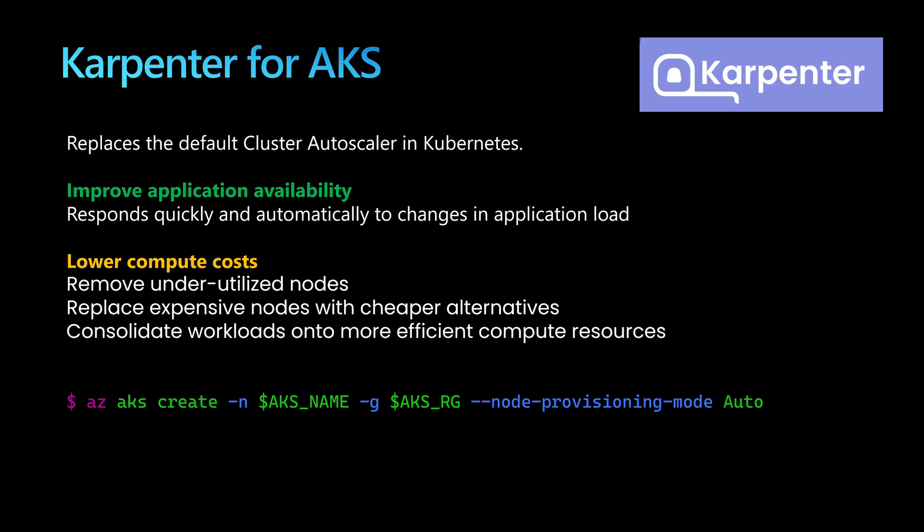With Karpenter, you can improve application availability because Karpenter can respond quickly and automatically to changes in application load. You can also lower compute costs because Karpenter will remove underutilized nodes and replace expensive nodes with cheaper alternatives. Karpenter can decide which node to remove and which node to add to the cluster, and it can decide the SKU and size of each new node.